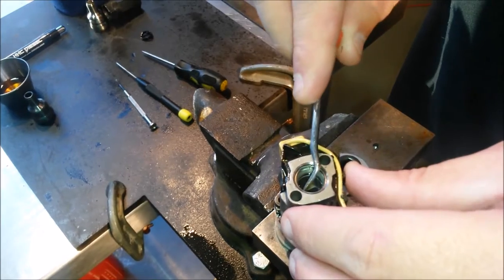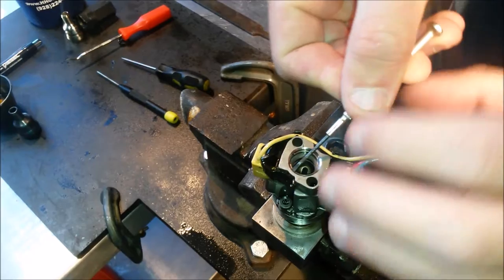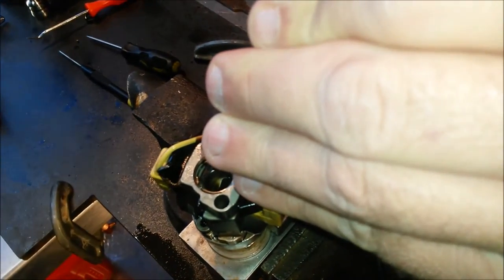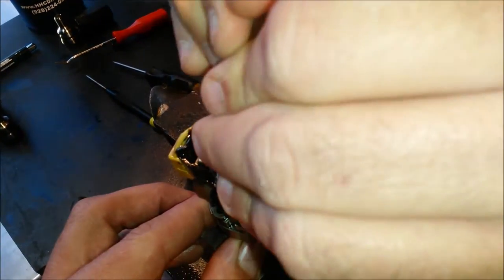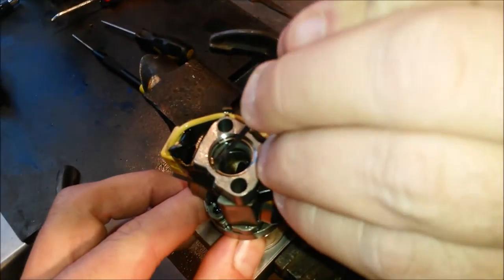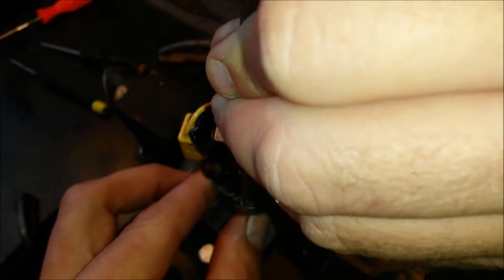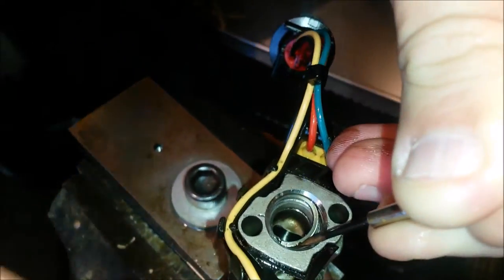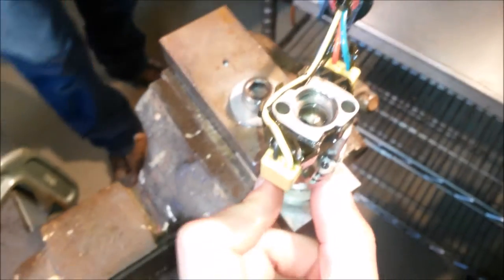And then we're going to push that beveled washer down so that it's not in the way of the C-clip and we don't damage it. And then what he's doing here is basically tapping the screwdriver into the back side of the C-clip. And he just made that look really easy.